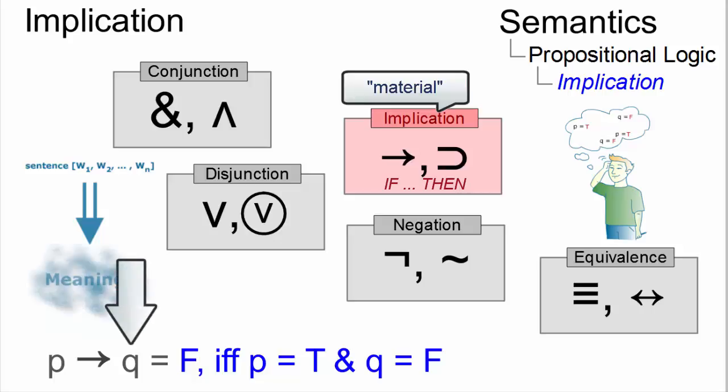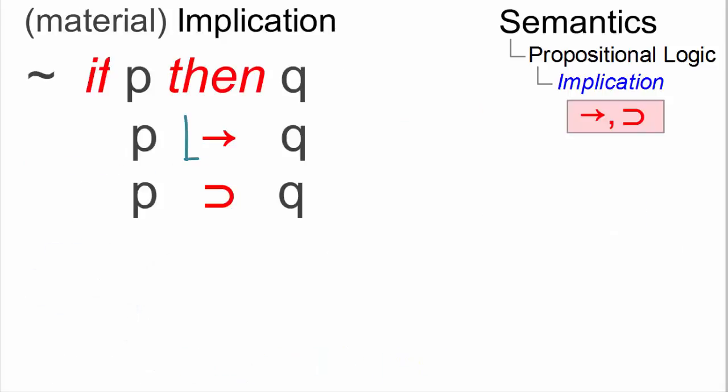is true, and its consequent Q, the then-clause, is false. The material implication is symbolized by a forward arrow or by the algebra symbol that is also used for sets.